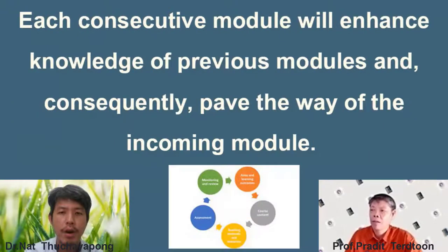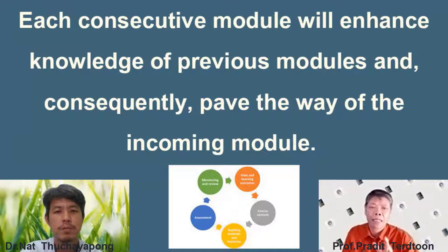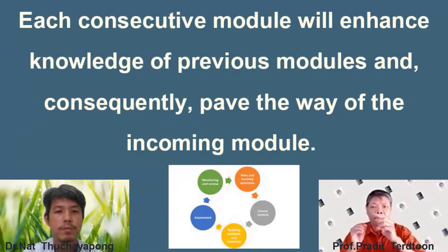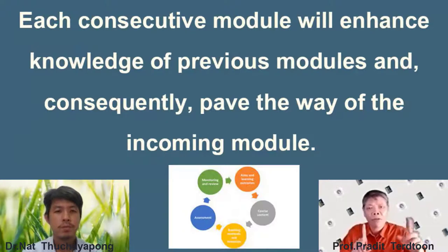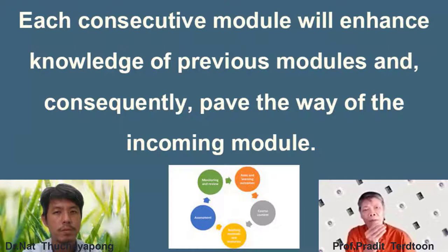What is the structure of each module? As mentioned, the module is not the whole course. A three-credit course takes about 45 lecture hours and can be divided into many modules. Since the modules are designed in a consecutive way — module one before module two, three, four, and so on — each consecutive module enhances the knowledge from the previous modules and also paves the way for the incoming modules that come after them.